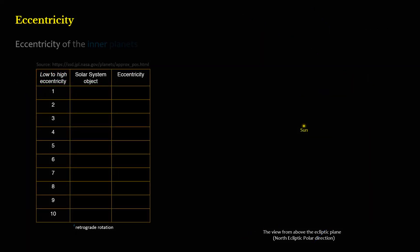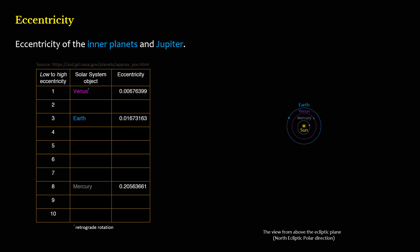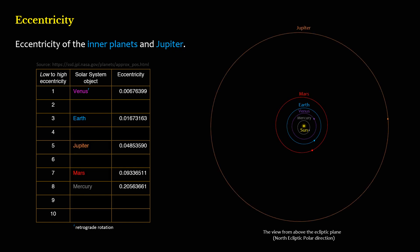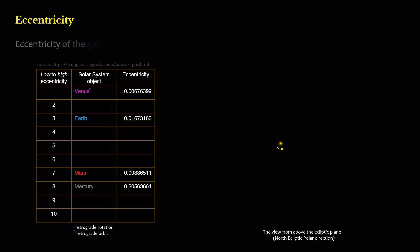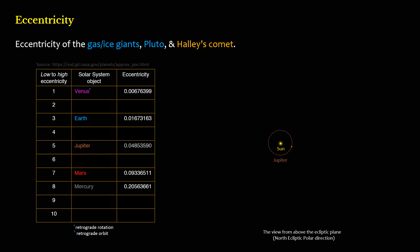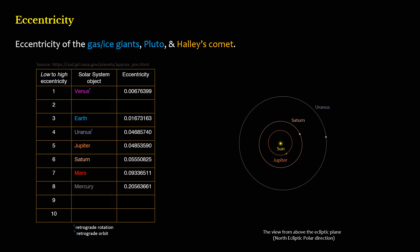Eccentricity of the inner planets and Jupiter: Mercury, Venus, Earth, Mars, Jupiter. Outer planets — Saturn, Uranus, Neptune, Pluto.